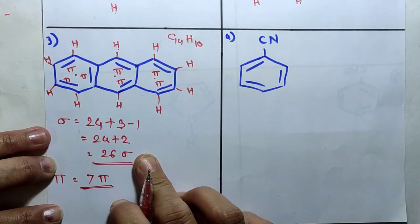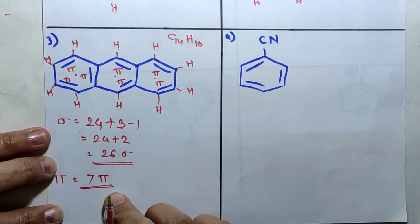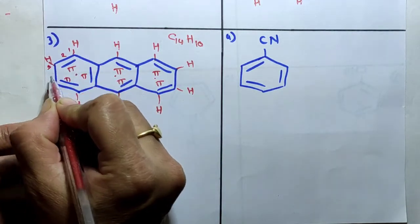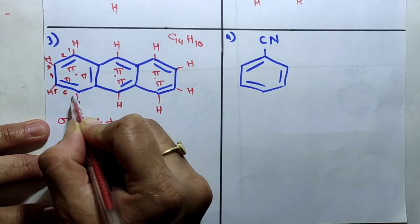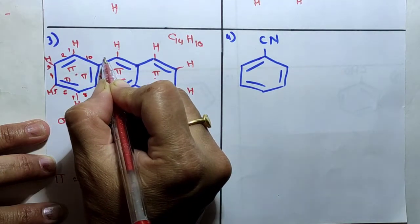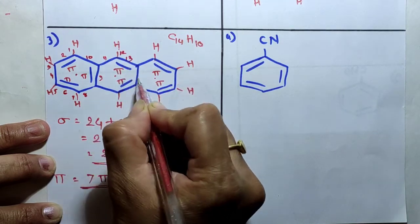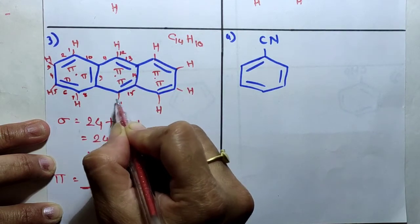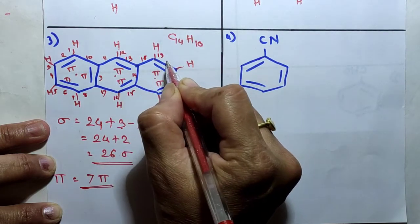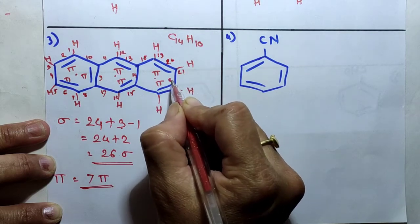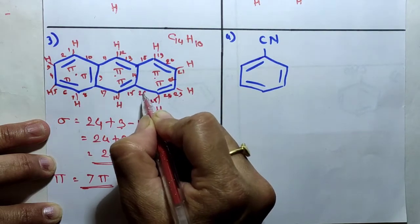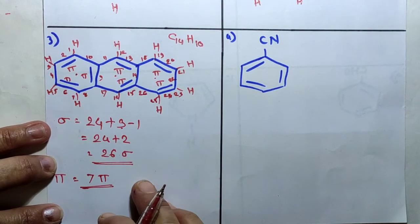We can verify the sigma bonds by counting in the structure: 1, 2, 3, 4, 5, 6, 7, 8, 9, 10, 11, 12, 13, 14, 15, 16, 17, 18, 19, 20, 21, 22, 23, 24, 25, and 26 sigma bonds are present in anthracene.